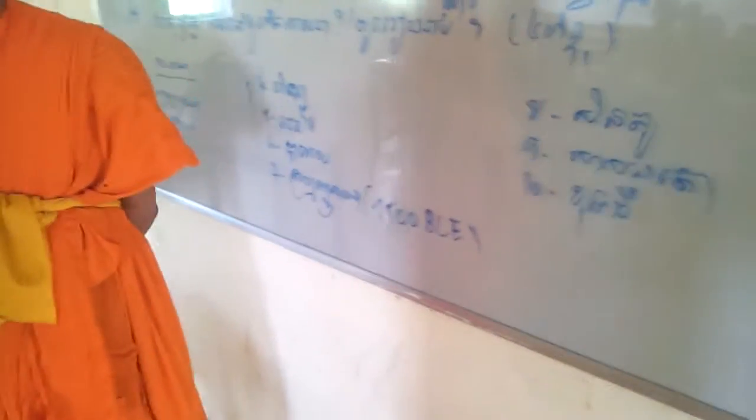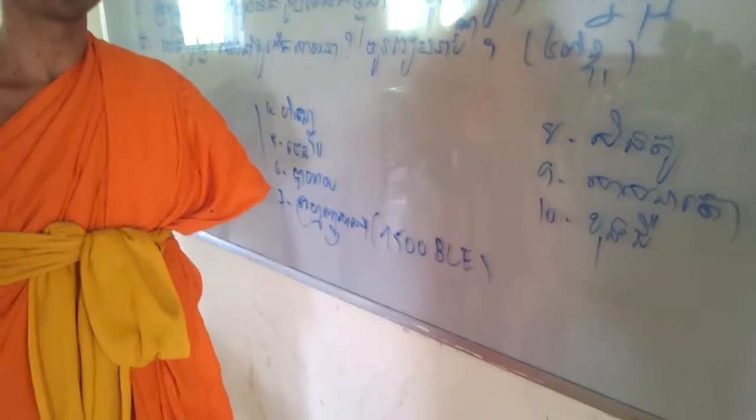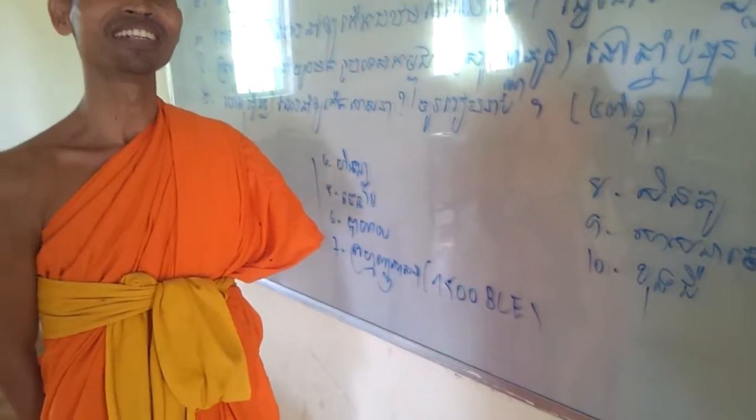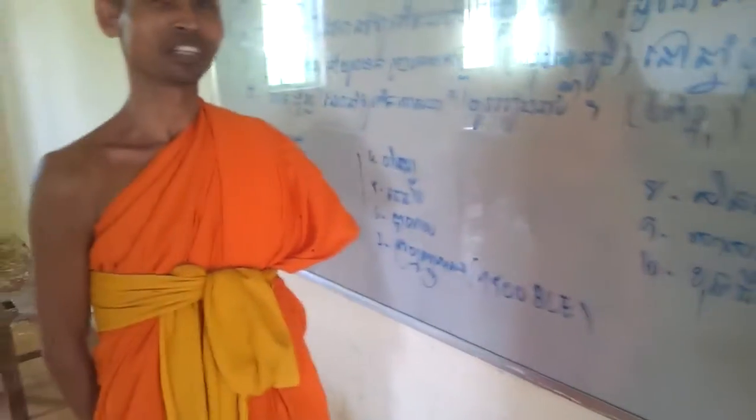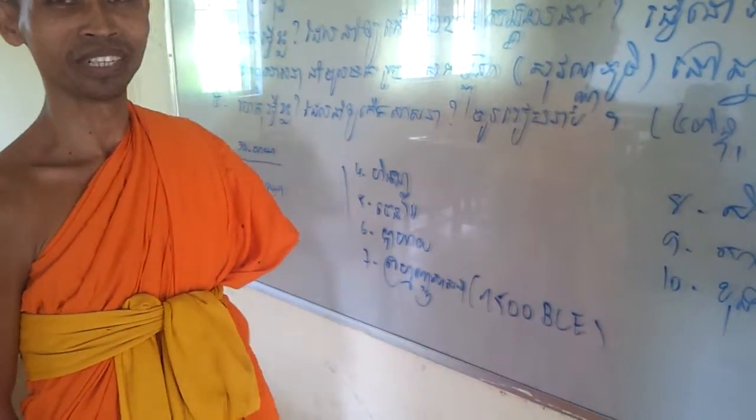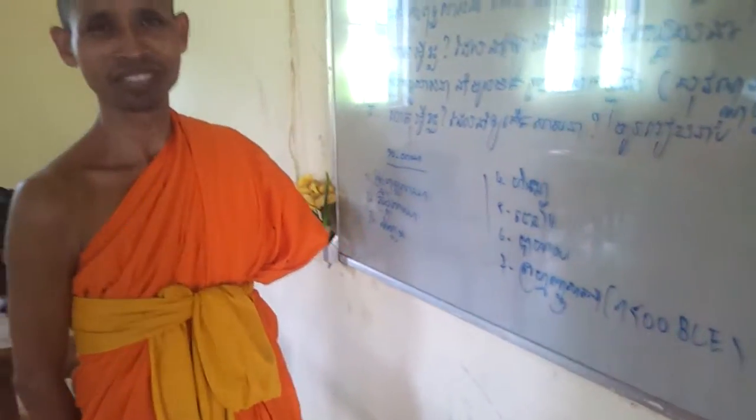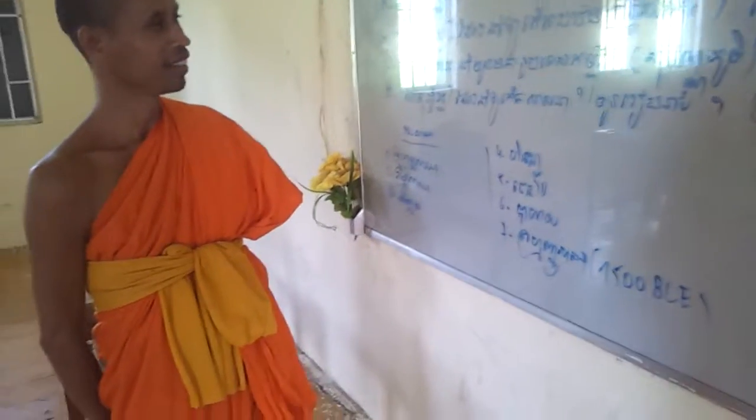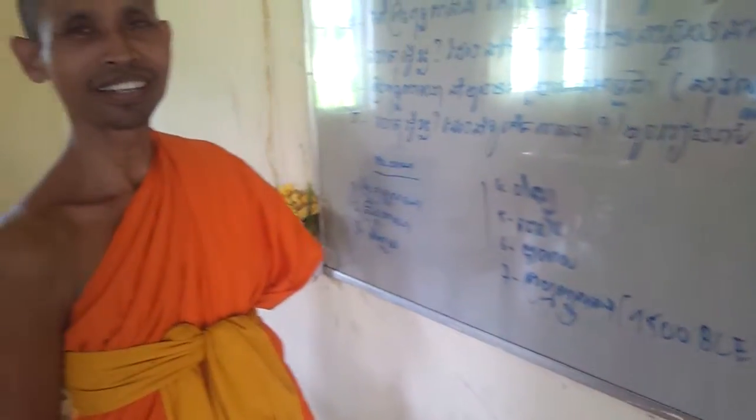Okay. And number ten is what? Number ten? Konchun. Konchun. Ah, Konchun. Okay. So, okay, ten religions. Okay, thank you very much.